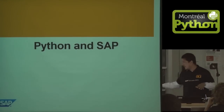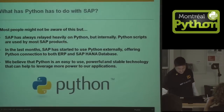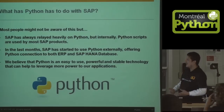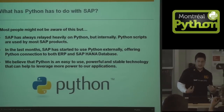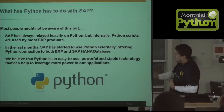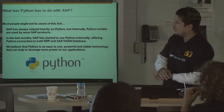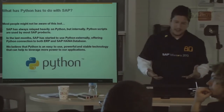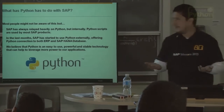Now, cutting the marketing and going straight to Python and SAP. Most people might not be aware of this, but SAP has always used Python internally, like forever. But in the last months, SAP has started to provide more ways for external people to use Python with both ERP and SAP HANA, because we believe that Python is a really solid, powerful, awesome, stable technology that allows us to leverage more power to our applications.